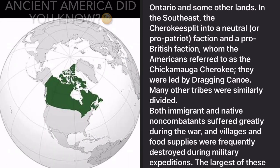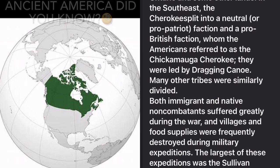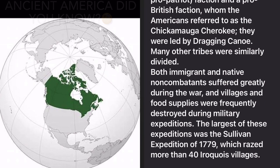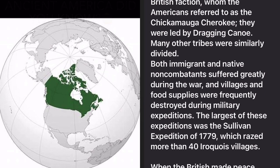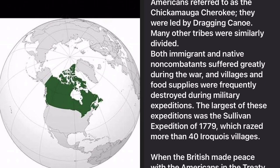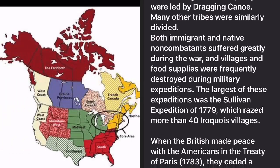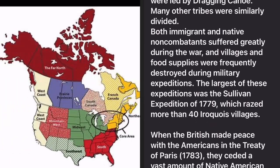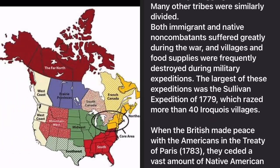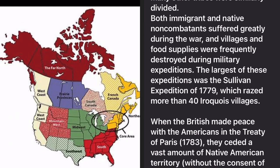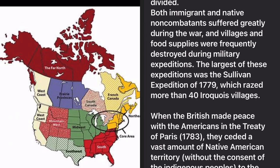In the southeast, the Cherokee split into a neutral or pro-patriot faction and a pro-British faction, whom the Americans referred to as the Chickamauga Cherokee, led by Dragging Canoe. Many other tribes were similarly divided.